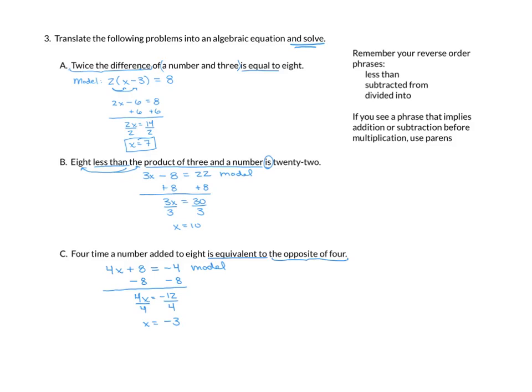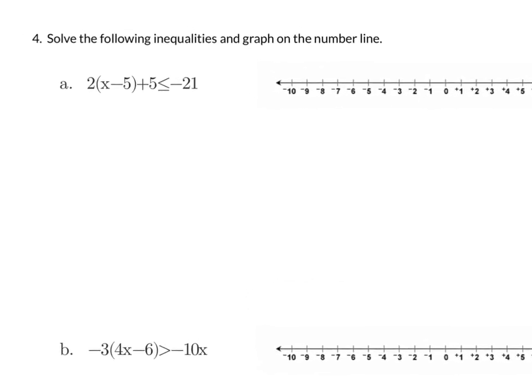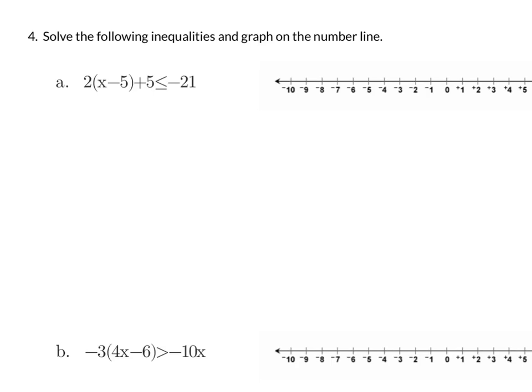That takes care of our translations. The last one we want to look at in this presentation is solving inequalities. First thing to remember: if you multiply or divide by a negative, flip your inequality sign. Also, when we graph, use a parenthesis for a strict inequality — meaning strictly less than or strictly greater than — or a square bracket if it is an 'or equal to' inequality. You will not be responsible for interval notation.